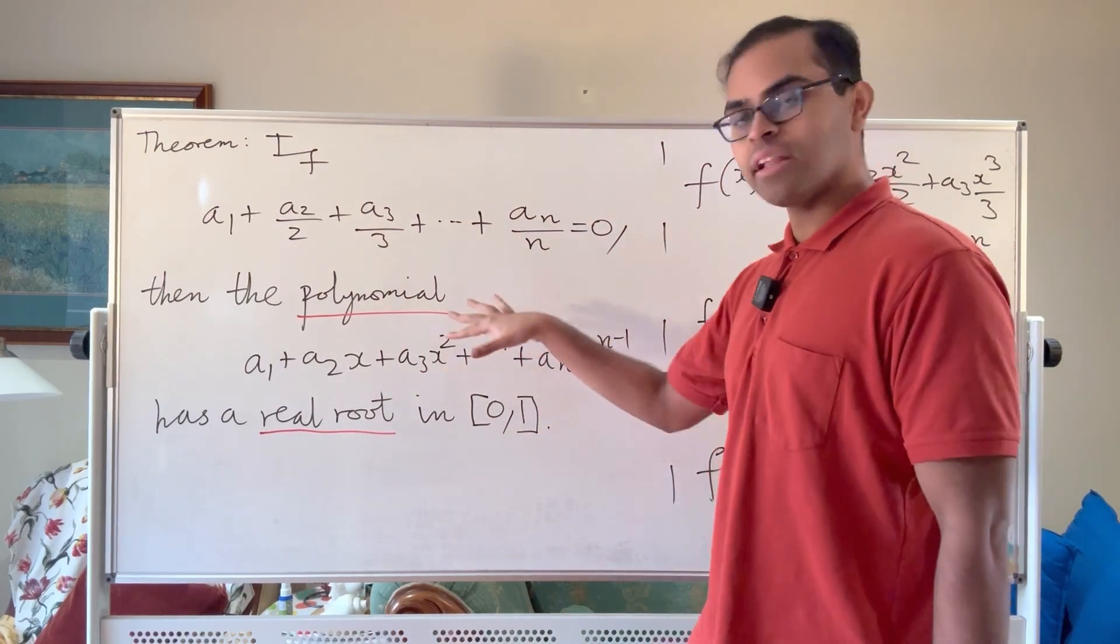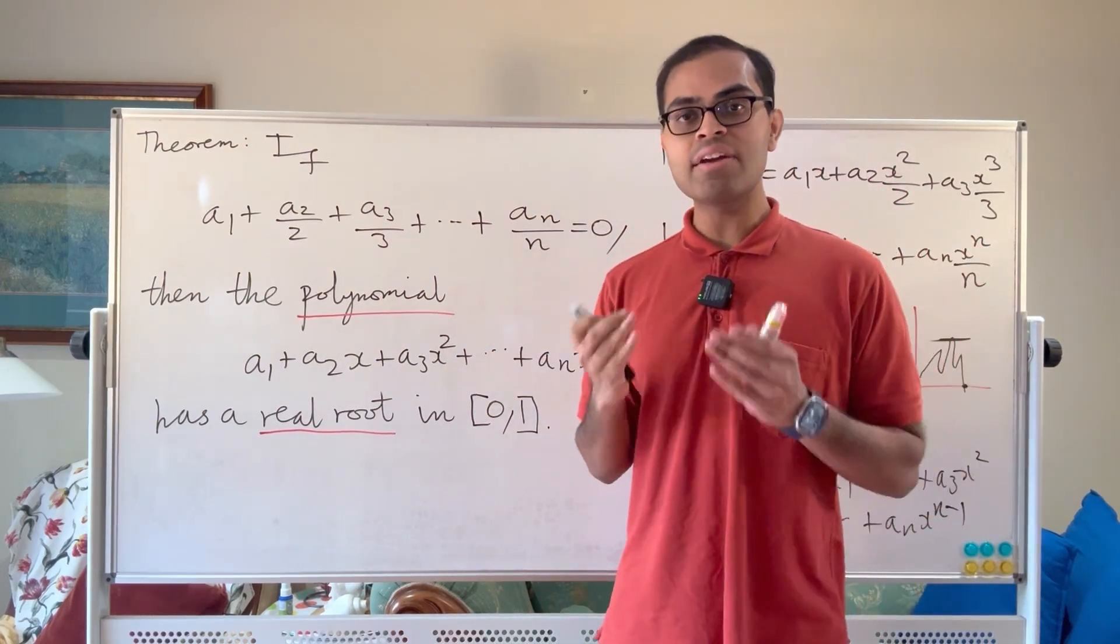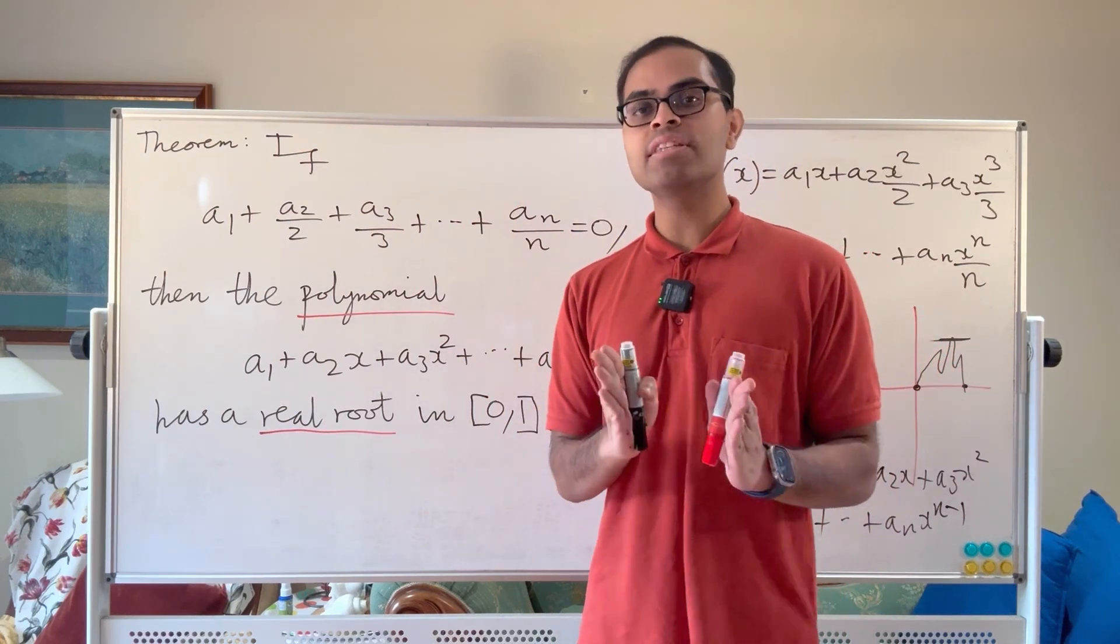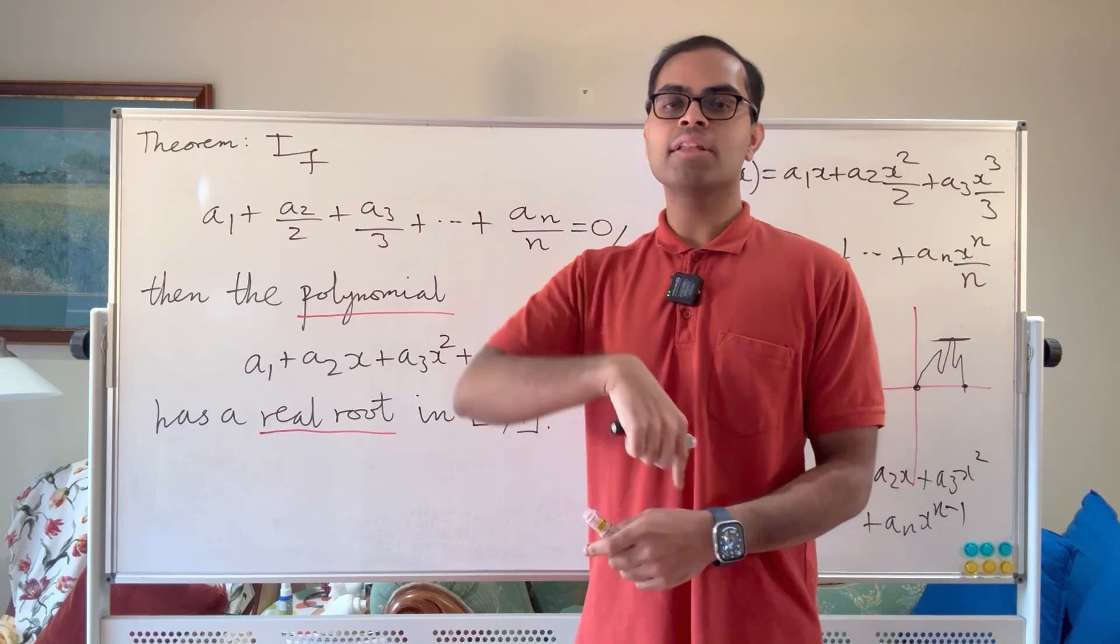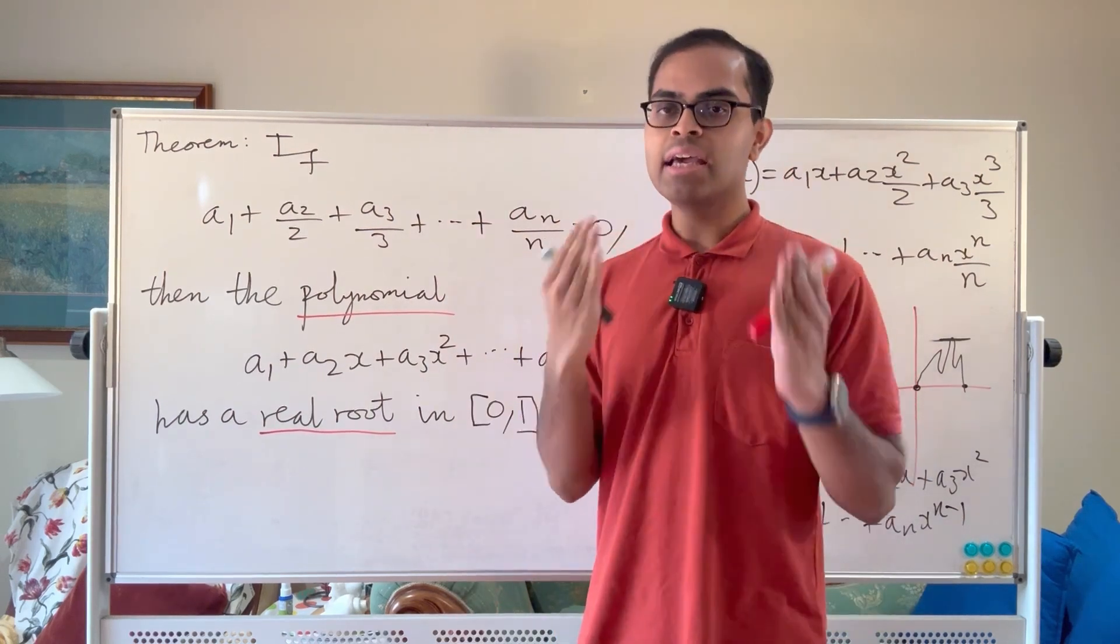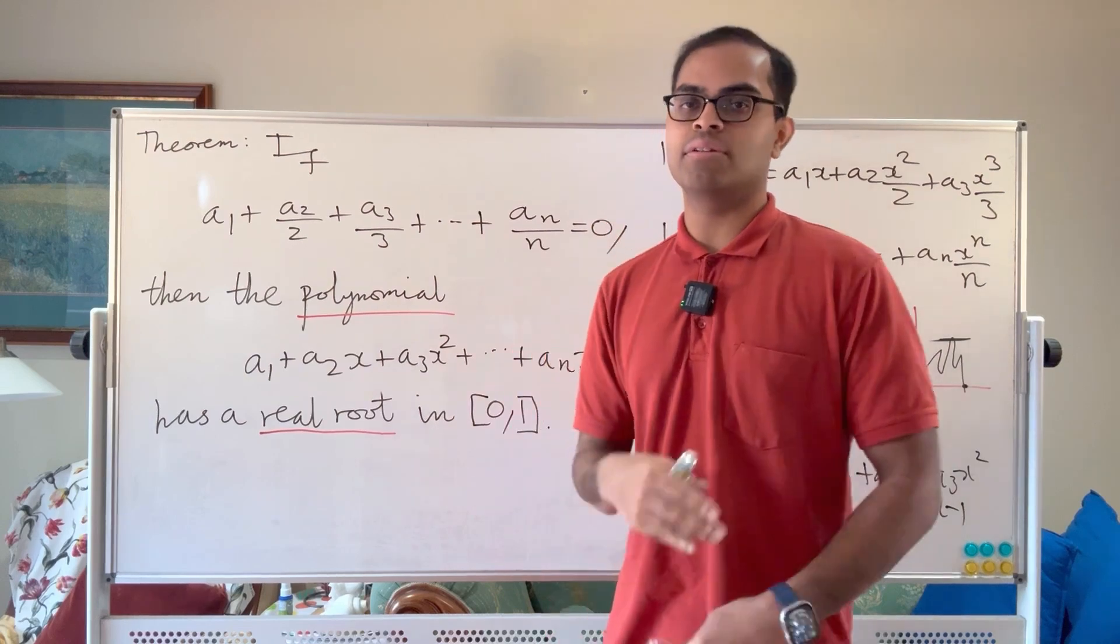And we know that the definite integral of this polynomial is the signed area under the graph of the polynomial from 0 to 1, that has to be 0. That means the polynomial has to be 0 somewhere. Otherwise it would be entirely above the x-axis or entirely below the x-axis. In either case, the signed area would not be 0. Another intuition, but it all boils down to Rolle's theorem.